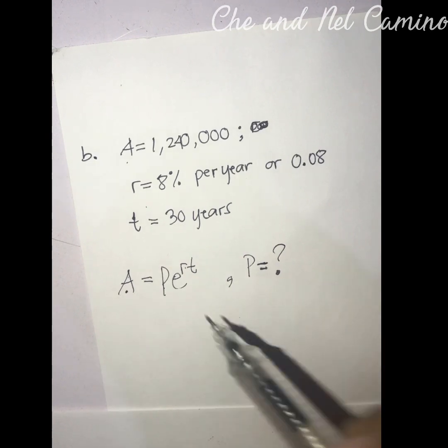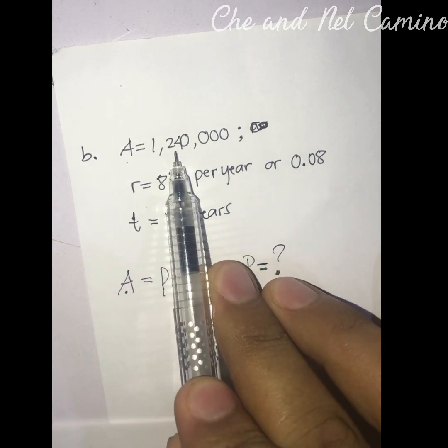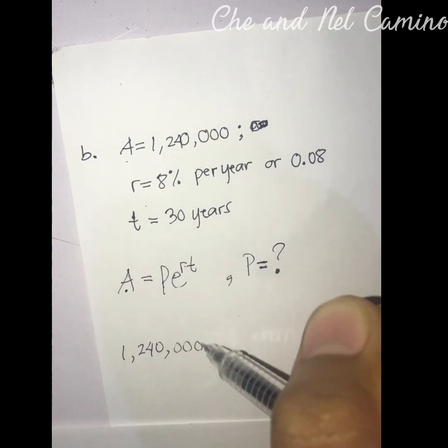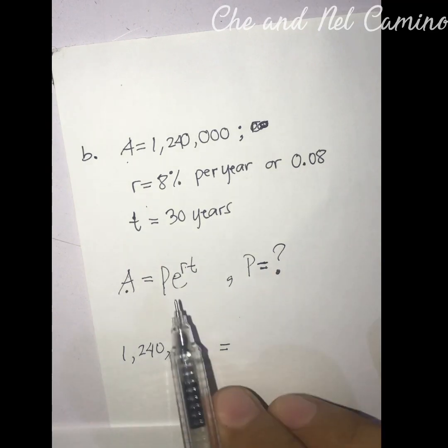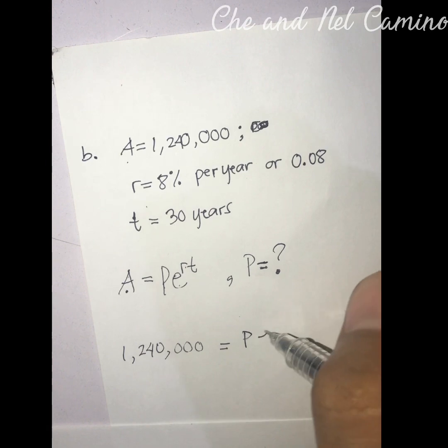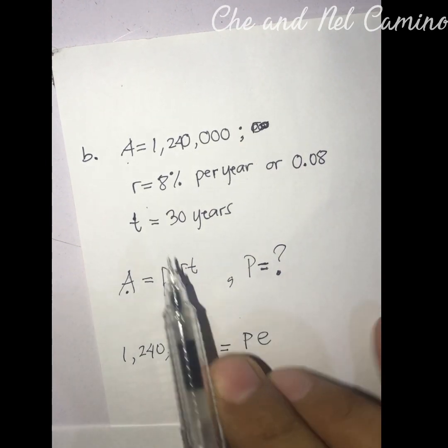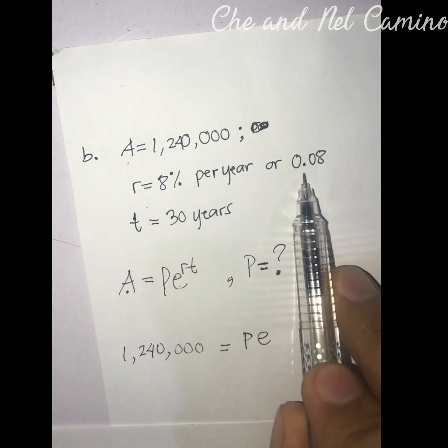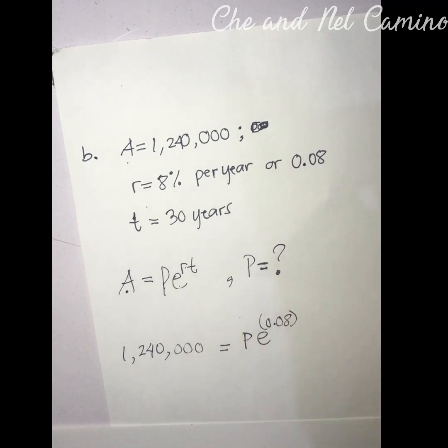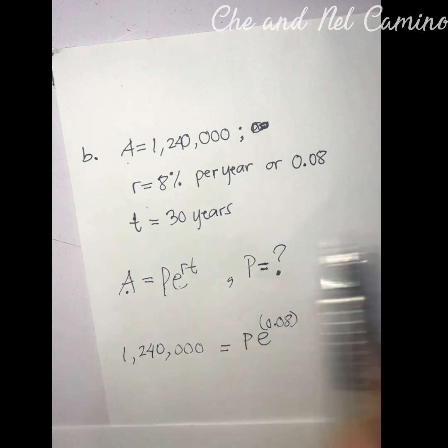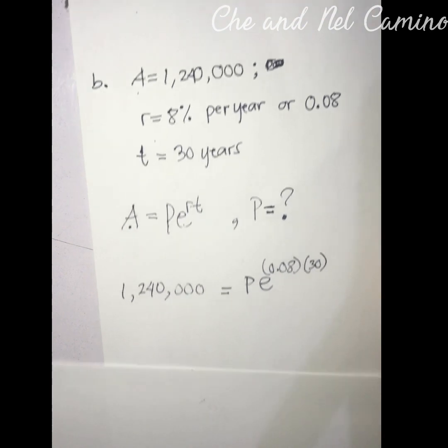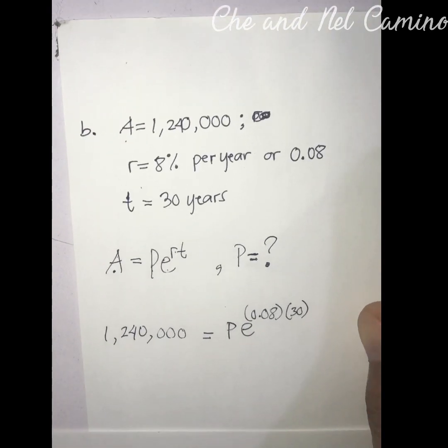Substitute the value of A, that is 1,240,000. Copy the variable P, copy the Euler's variable. What is the value of r? That is 8% or 0.08. Let's enclose this and the value of t is 30 years.